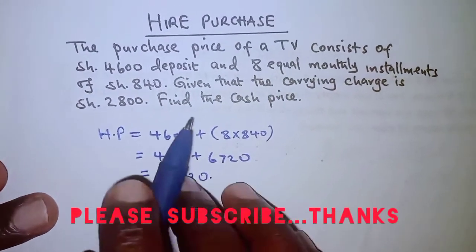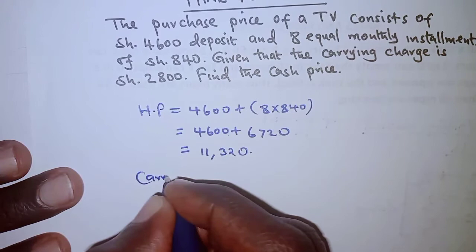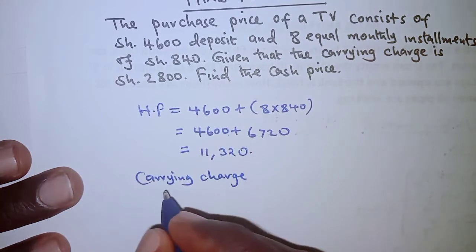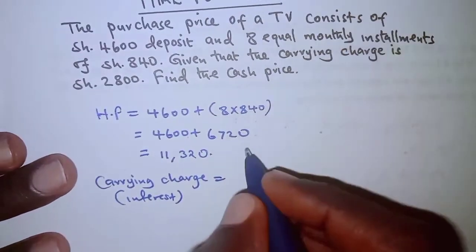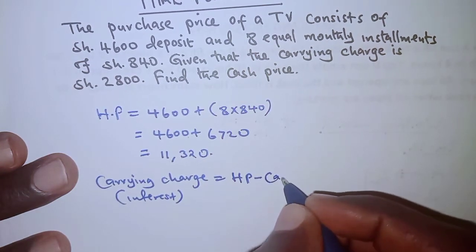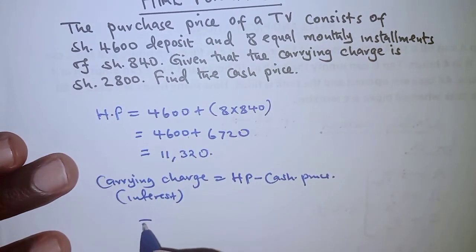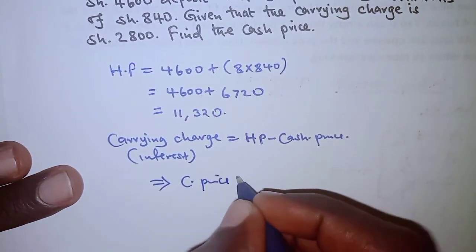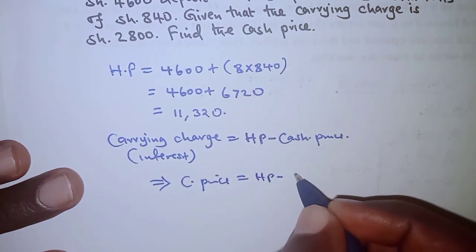To determine the cash price, we know that the current charge — which in other words is interest — is obtained by having the hire purchase price minus the cash price. So that implies that the cash price is obtained by having the hire purchase price minus the current charge.